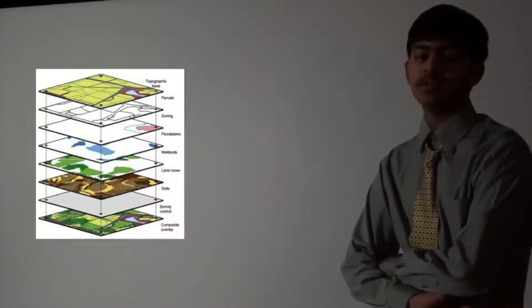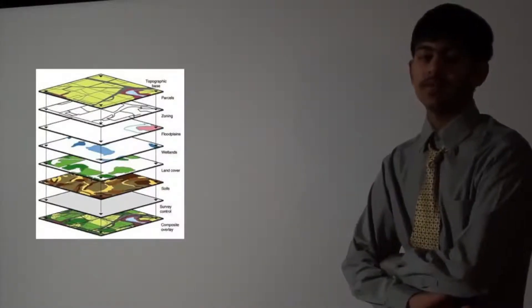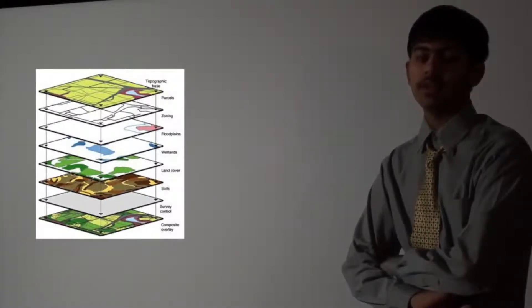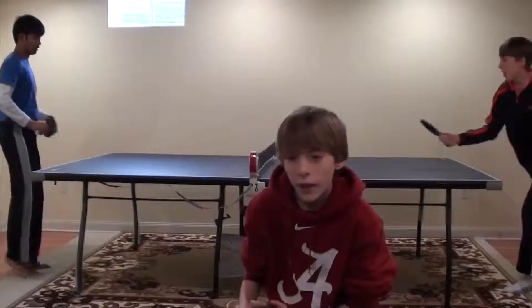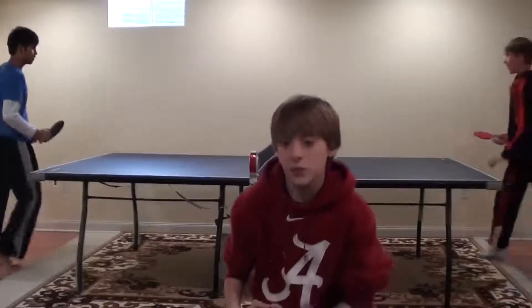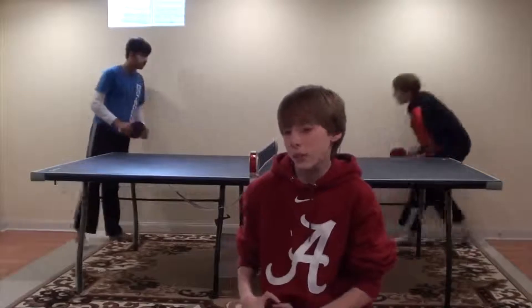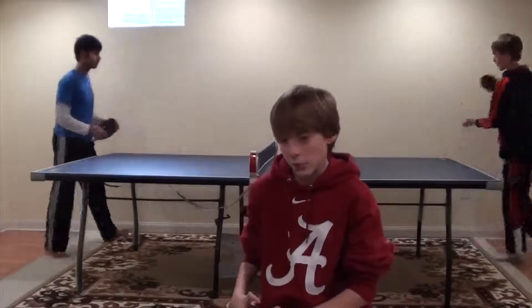GIS stands for Geographic Information Systems. It stores different types of maps to help make decisions. It makes terrain, roadway, and population maps. There are many maps, but today I'm going to be talking about one specific map — a topographic map.